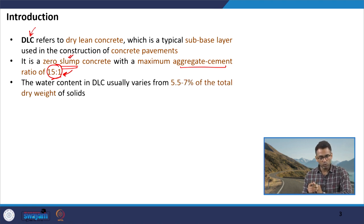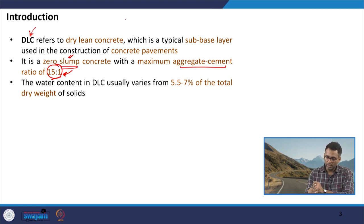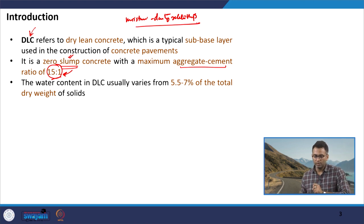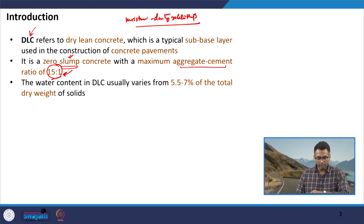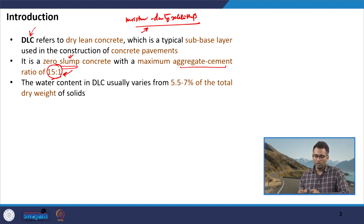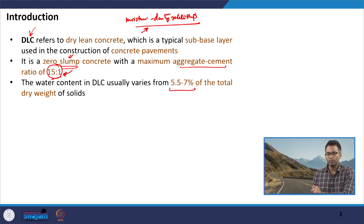The water content also has to be determined — what should be the optimum water content. Water content is usually determined by looking at the moisture-density relationship of the concrete mixtures produced in the laboratory. These mixtures are produced at varying moisture content, typically ranging from 5.5 to 7 percent.